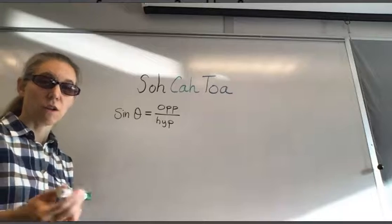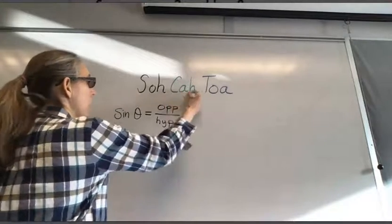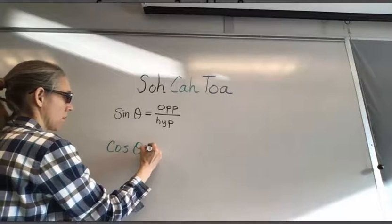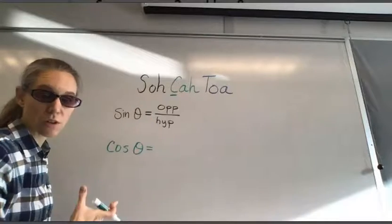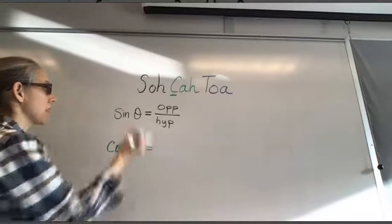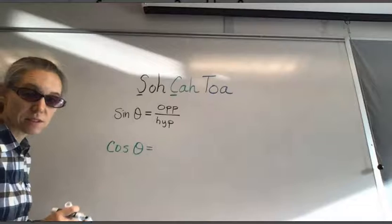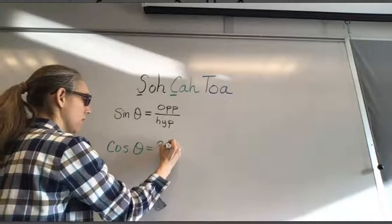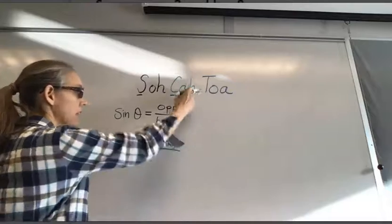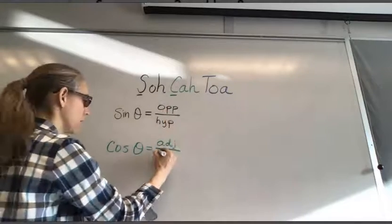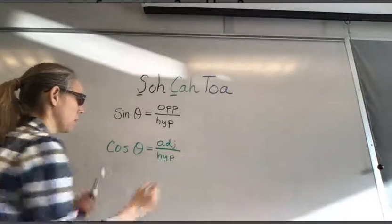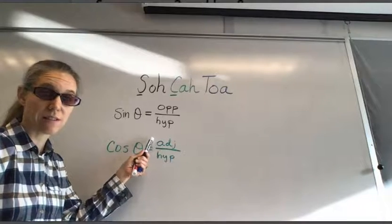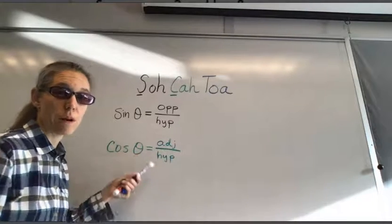Similarly, COH gives us cosine. The C stands for cosine, the A means adjacent, and again H is hypotenuse. So cosine of theta is equal to the adjacent side over the hypotenuse.